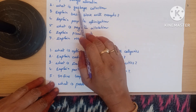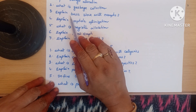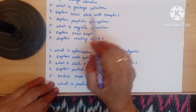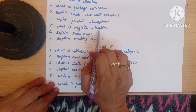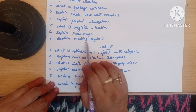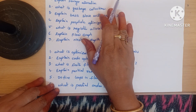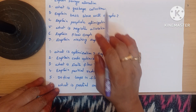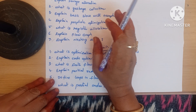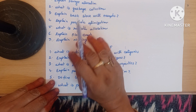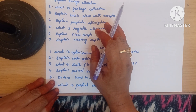Unit 4 runtime environments and code generation: explain storage allocation, what is garbage collection, explain basic blocks with examples, explain peephole optimization, what is register allocation, explain flow graphs, explain nesting depth. The difference between short and long answers is that for a long answer, write the full concept — all methods — whereas for short answers, write just the concept.